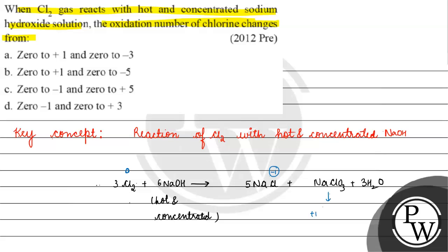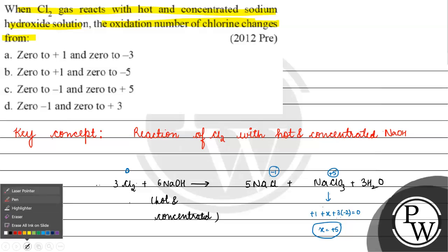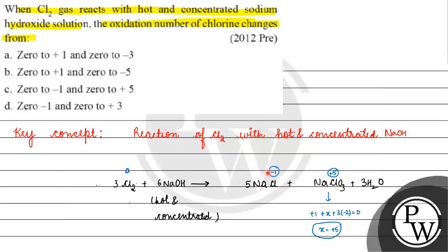होती है minus 1। और अगर हमें निकालना है NaClO₃ में — sodium की oxidation state plus 1 रहती है, chlorine की हमें निकालना है इसलिए इसका x लेते हैं, oxygen की हम लोग लेते हैं minus 2, और 3 oxygen atoms हैं इसलिए 3 into minus 2। x की value आजाएगी plus 5। यानि जो oxidation state change हुई chlorine की वो हुई from 0 to minus 1 and from 0 to plus 5। तो correct answer for this question would be Option C: 0 to minus 1 and 0 to plus 5. I hope you understood it well. Thank you and all the best.